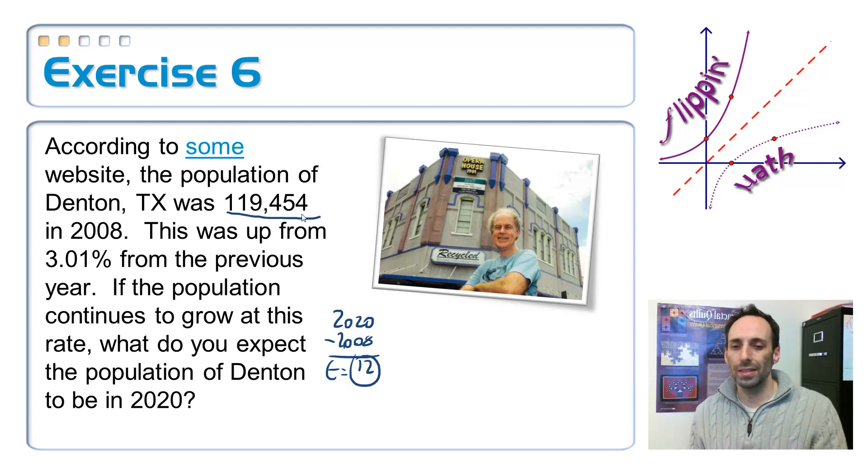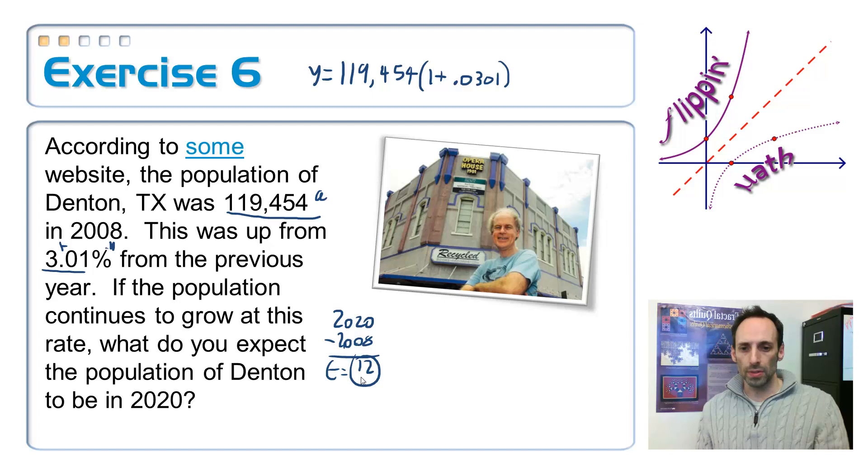This 119,454, that's our original amount, A, that's what we're starting with. And then finally, our R value, written as a percent, is 3.01%. So my equation then would be y equals, start with the original amount, 119,454, and then I'm going to multiply it in parentheses times that growth factor, which is 1 plus my rate, written as a decimal, 0.0301, all of this raised to however many times I'm doing this, and since this is years, 12 years, I'm going to raise that to the 12th power.